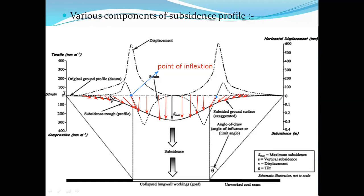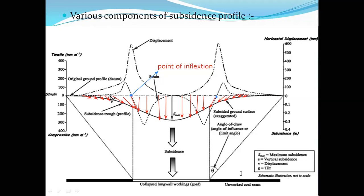To recap the angles: angle of draw is the angle made by the line joining the edge of the opening and the point of zero subsidence with the vertical. Angle of break is the angle made by the line joining the edge of the opening and the point of maximum tensile stress with the vertical. These are the basic types of terminology used as part of the subsidence profile.